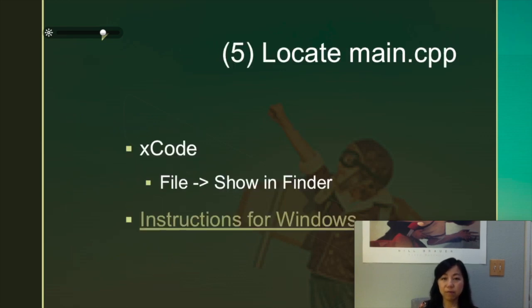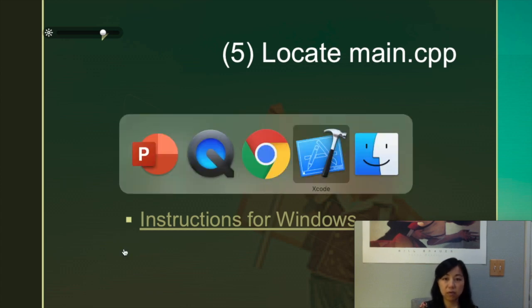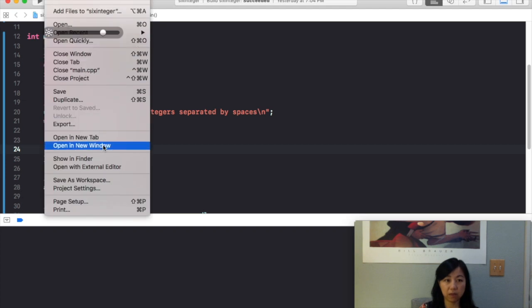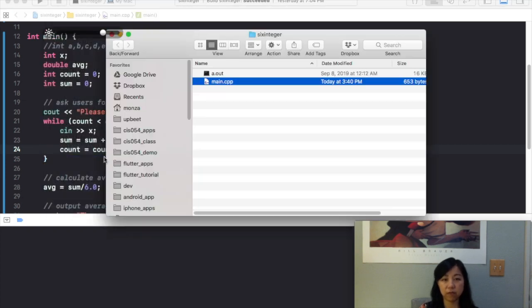And then you might have problem locate the main dot CPP. I think one or two people asked me about this. So in Xcode, it's actually pretty simple. If you go to Xcode and then you go to the file and then you click the show in finder, this is the main dot CPP file. And so you can just drag and drop in canvas to submit your assignment.